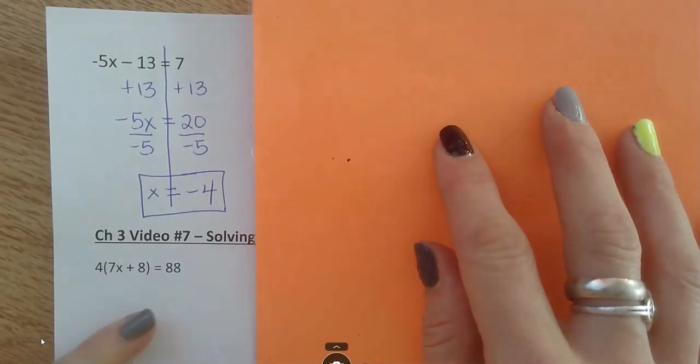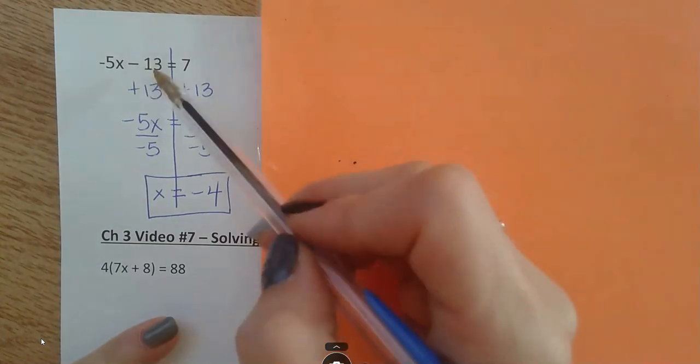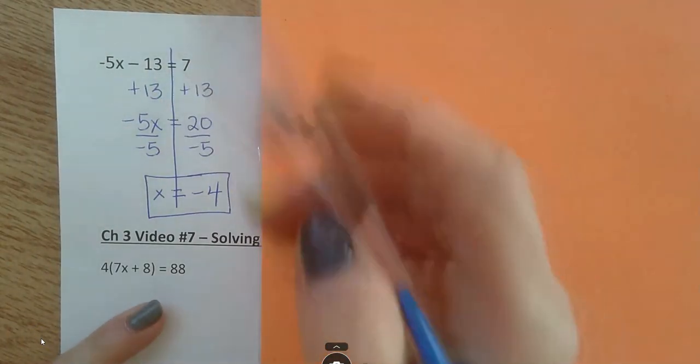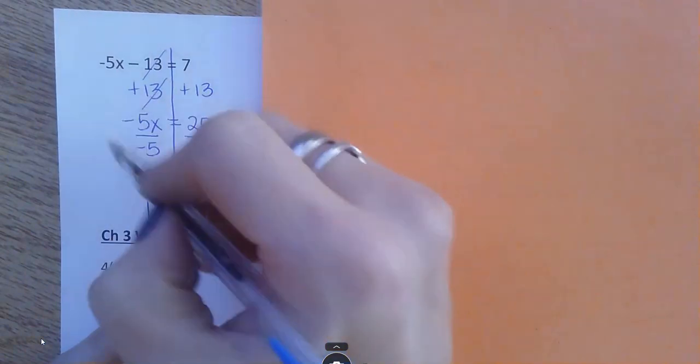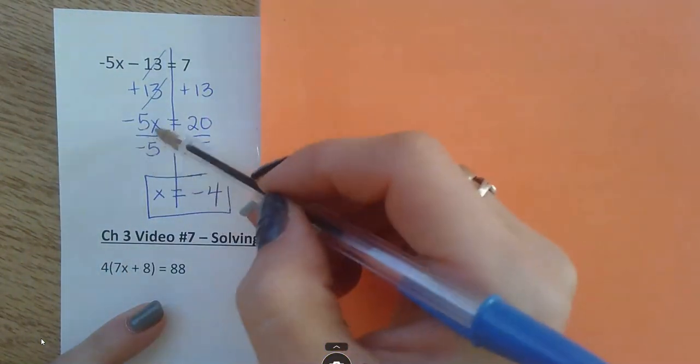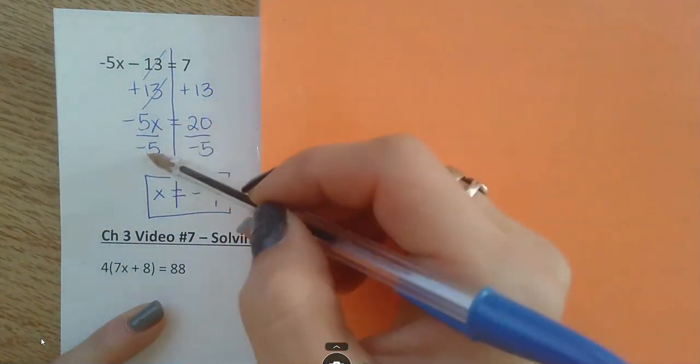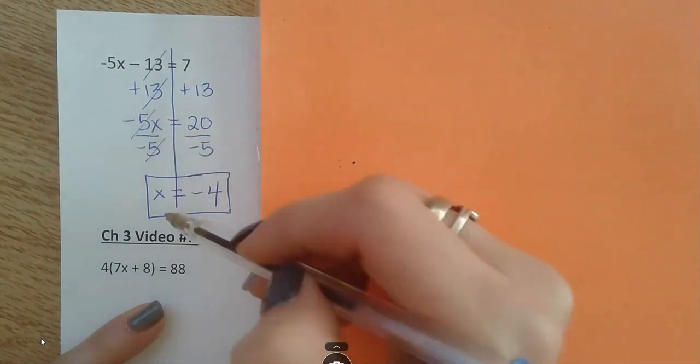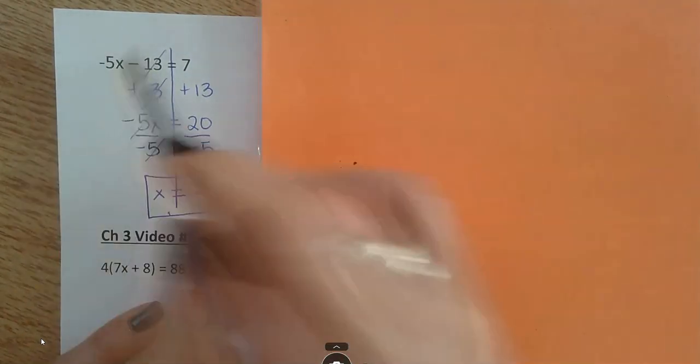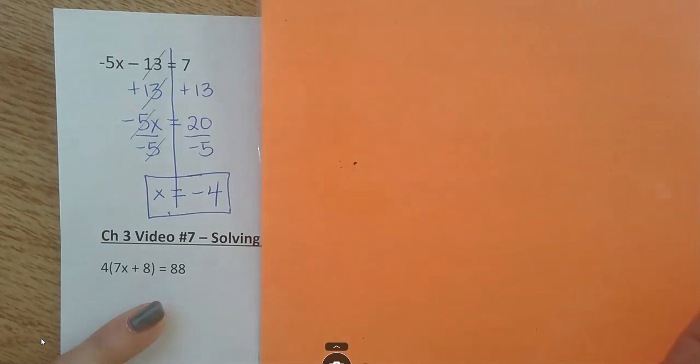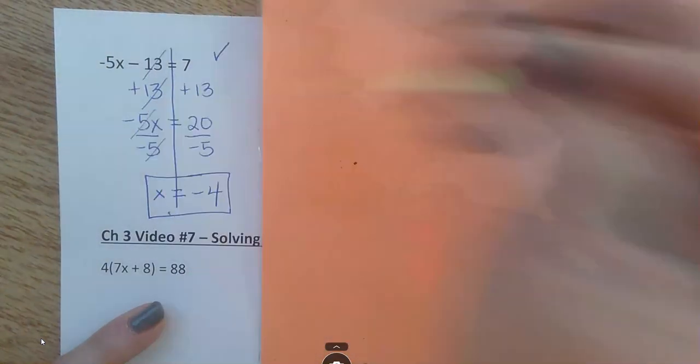Okay. This is the first one on the back there. I did plus 13 on both sides. These should cross out. Bring everything down. Now, negative 5x equals 20. Divide by negative 5 on both sides. And I got x is negative 4. And if I plug that back in, yep, it works.